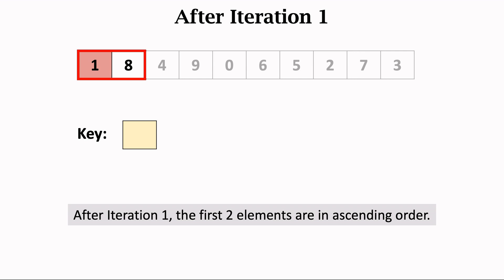Let me recap what we have done so far. In each iteration, take the rightmost element out of the subarray — the red rectangle — and let this element be the key. Then insert the key back to the subarray. To perform the insertion, all elements greater than the key must be moved one step right to make a room. Then insert the key to the vacant position. This is why the algorithm is called insertion sort.